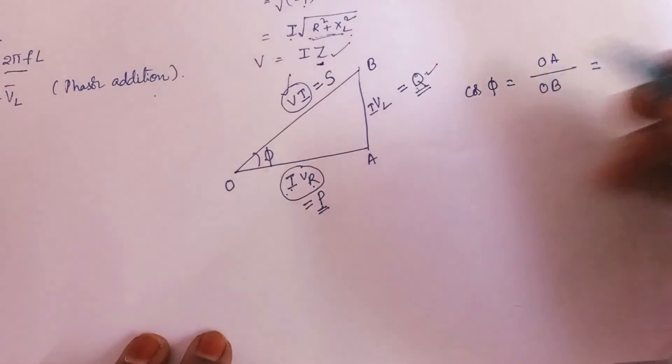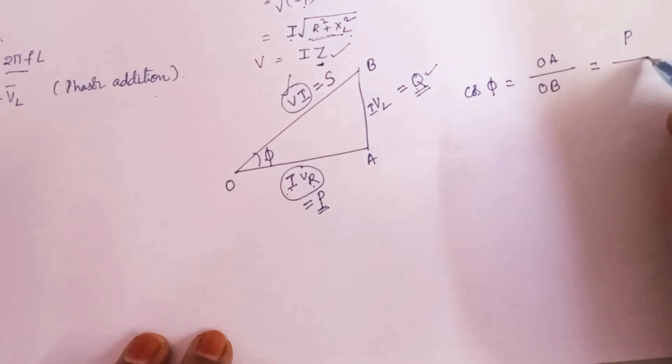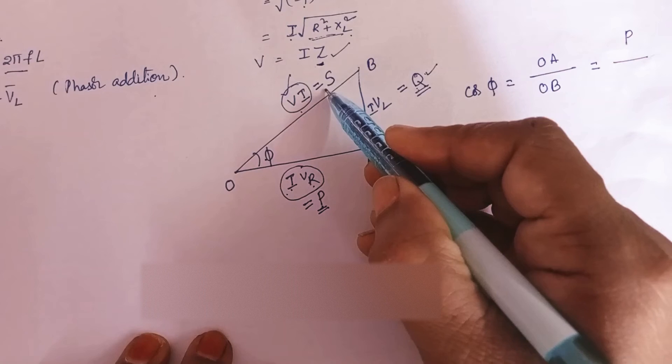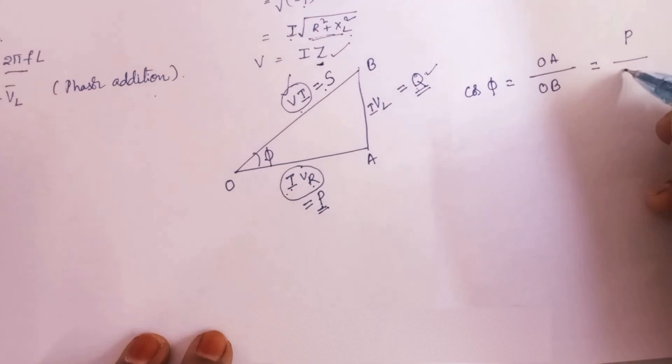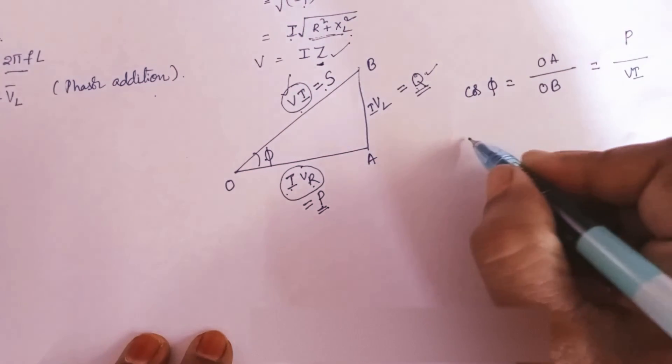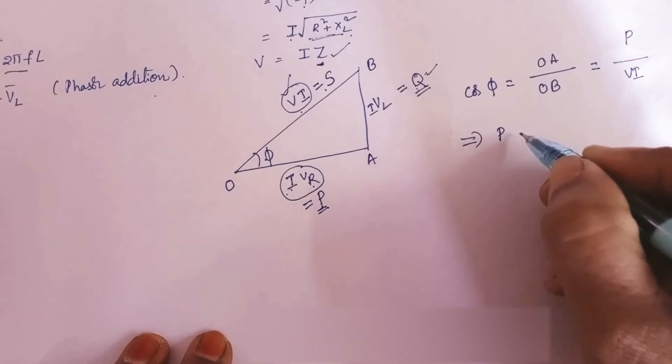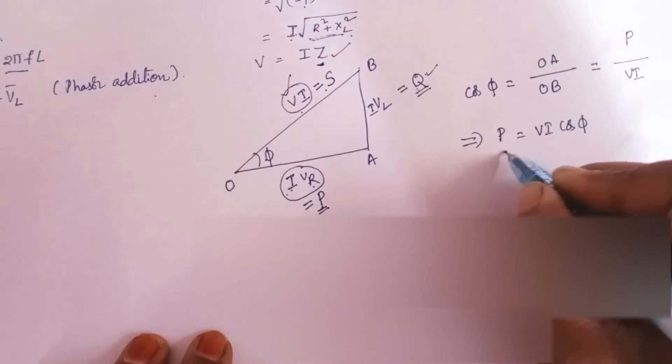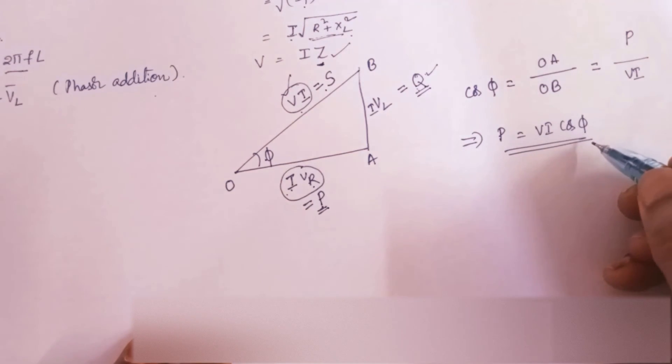OA is P by OB, you assume that as VI instead of S. So it is VI. From this, P is unknown for us. So P will be VI cos phi. This is the standard notation for the real power.